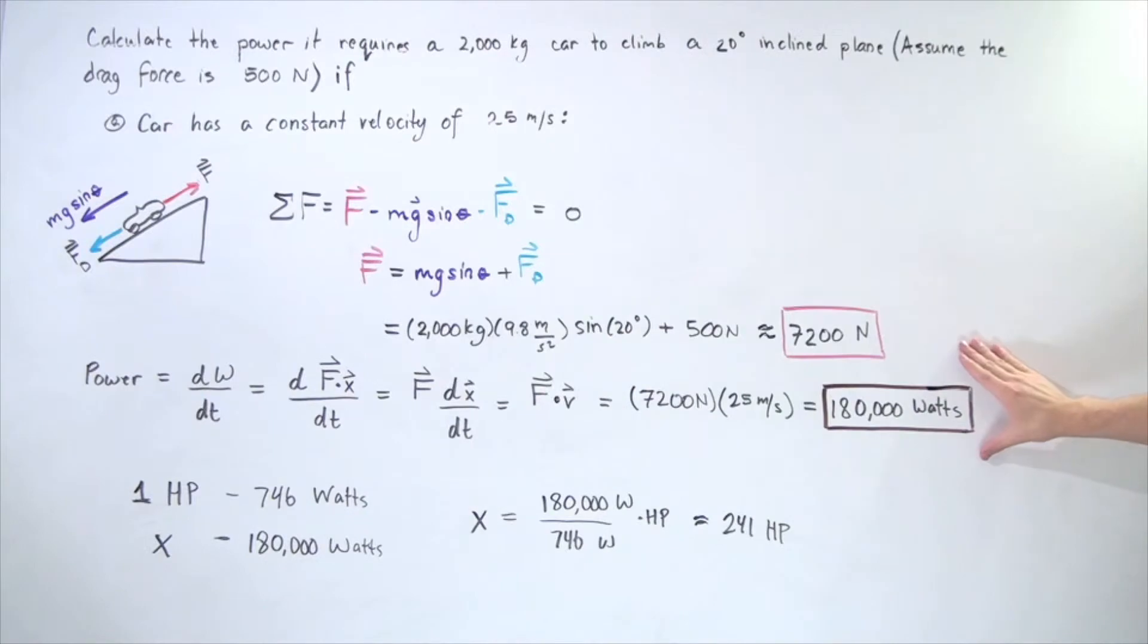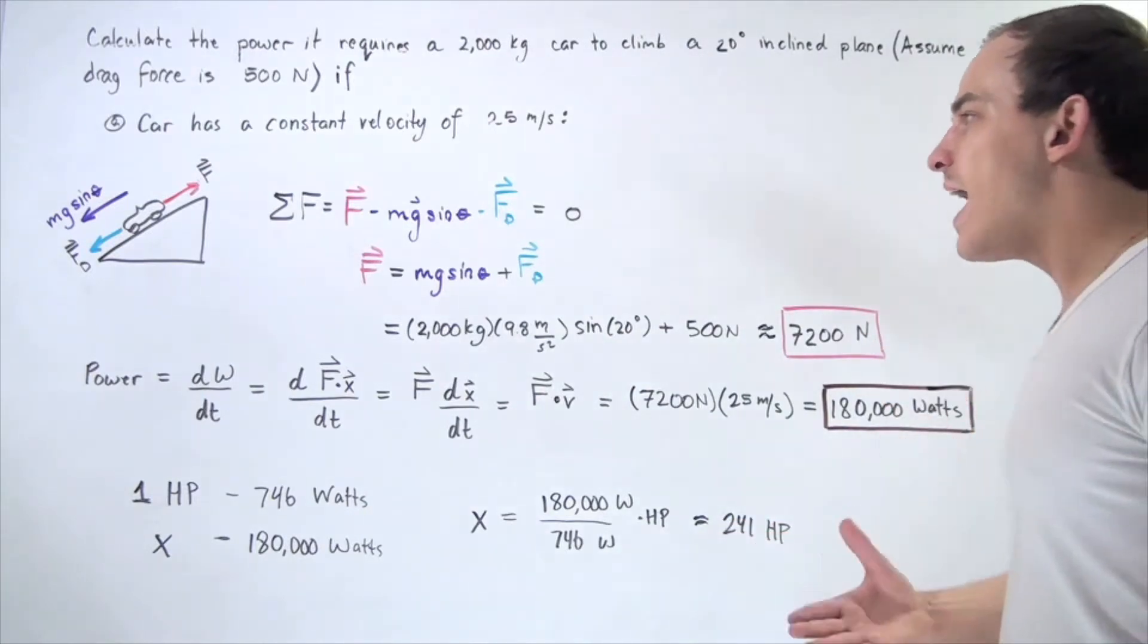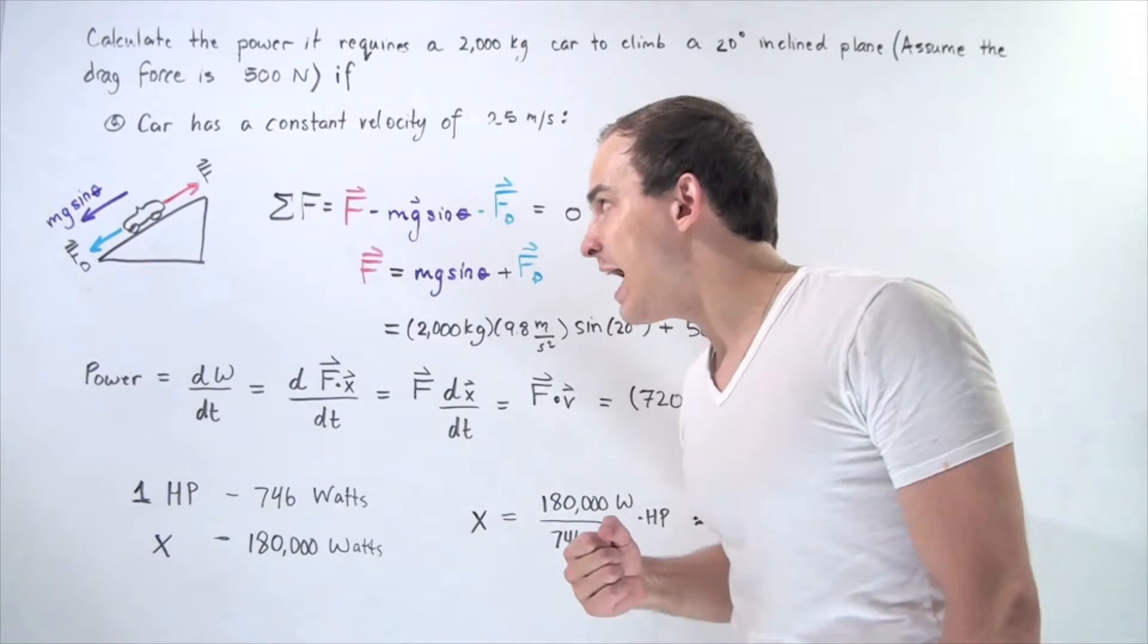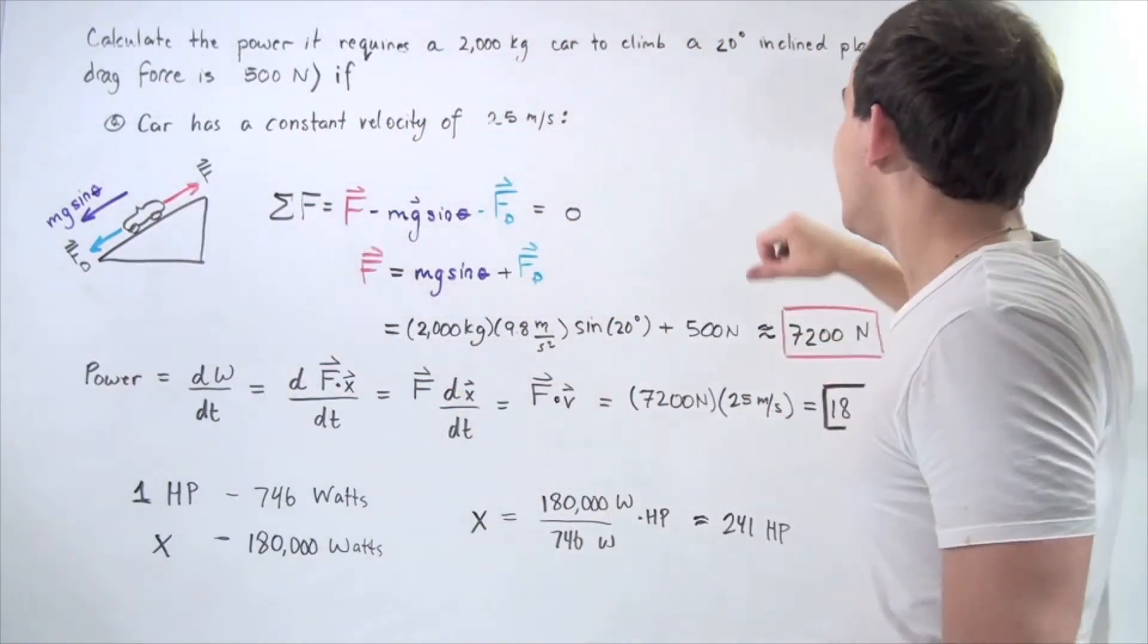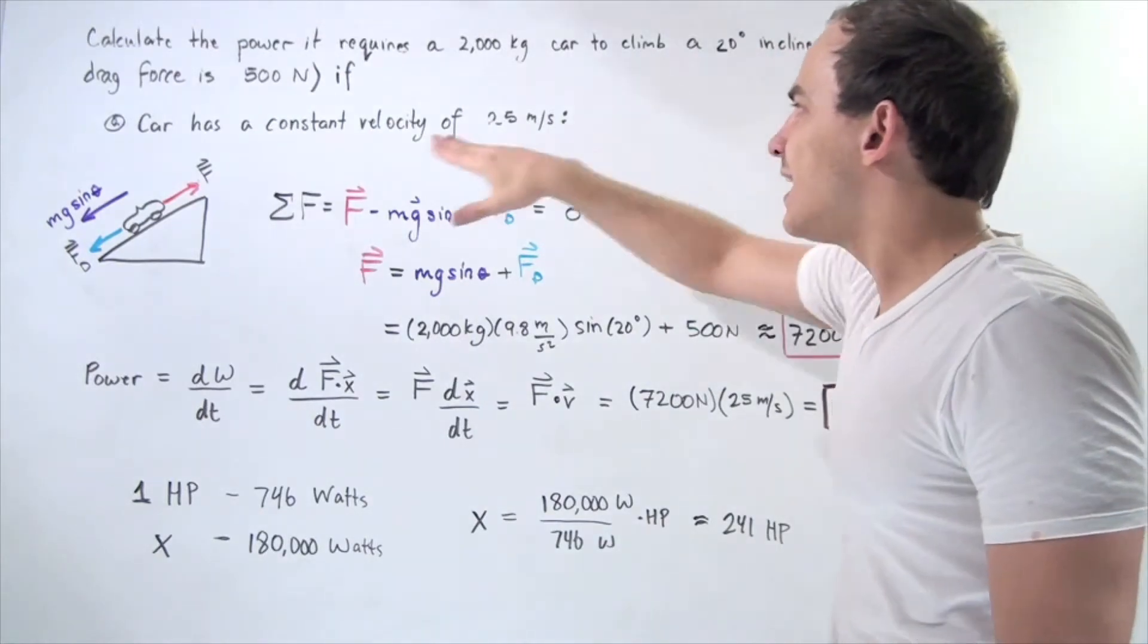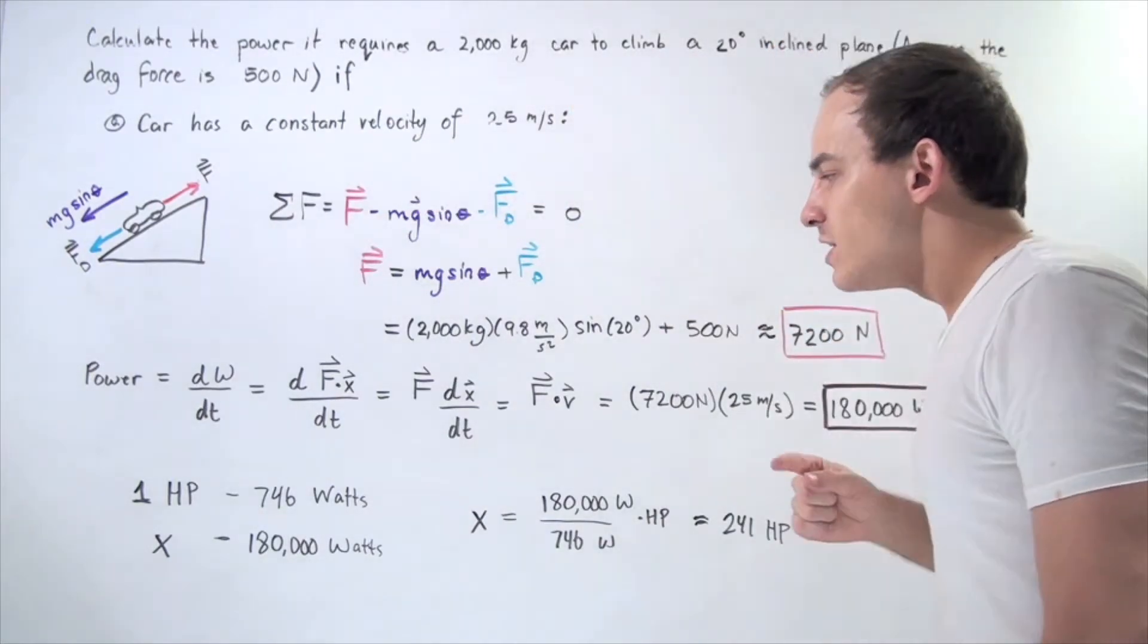Let's suppose we want to convert this to horsepower to see how much horsepower our engine and the car must have for the car to be able to climb this inclined plane of 20 degrees at a constant velocity of 25 meters per second.